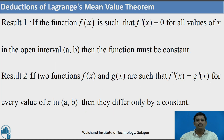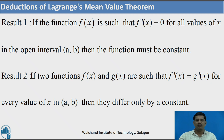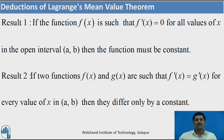Consider some deductions of Lagrange's mean value theorem. If the function f(x) is such that f'(x) = 0 for every value of x in the open interval (a, b), then the function f(x) must be a constant function.